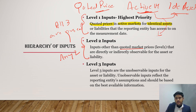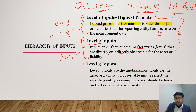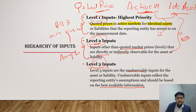Level 2 inputs also apply when there is an active market for an identical asset but no quoted price. In exam questions, if all three criteria are present it is Level 1 — highest priority. If any two are present, it is Level 2. Level 3 inputs are unobservable inputs for the assets or liabilities. They reflect the reporting entity's own assumptions and should be based on the best available information when Level 1 or Level 2 inputs cannot be used.